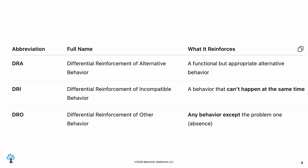So these are the three types you have to be clear on. DRA is differential reinforcement of alternative behavior — a functional but appropriate alternative behavior. DRI is differential reinforcement of incompatible behavior — a behavior that physically cannot happen at the same time as your problem behavior. And DRO is differential reinforcement of other behavior — any behavior except the problem one, meaning it's the absence of your problem behavior.